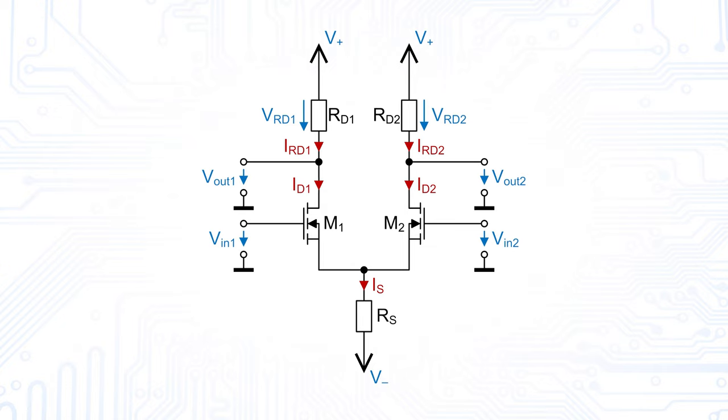To understand the basic function of a differential amplifier let's first assume that the circuit's components are ideal. This means both halves of the circuits are identical, so both transistors have identical properties, their drain resistances have the same value and the current source sinks a constant current despite any other conditions in the circuit.